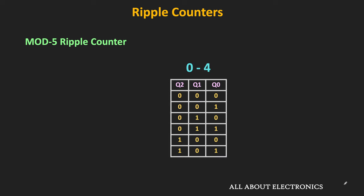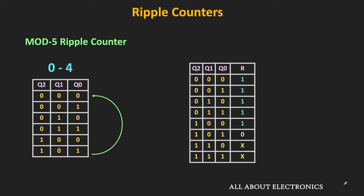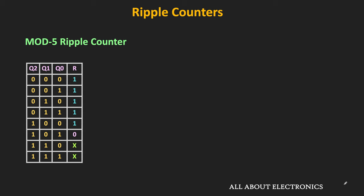Now let us see how to design this combinational circuit. Since the clear input is active low, up to count 100 the output of this combinational circuit should remain 1. As soon as the count goes to 101, it should generate the clear signal — meaning for the 101 combination, the output of this logic circuit should become 0. The remaining two combinations (110 and 111) are don't care terms. With the help of a K-map, let us find the simplified expression. Since we have only one zero term, we try to combine it with the don't care terms.